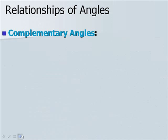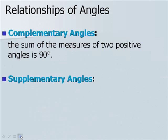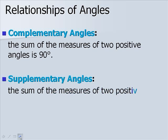We have two relationships of angles. The first is complementary angles, where the sum of the measures of two positive angles is 90 degrees. Then supplementary angles, where the sum of the measures of two positive angles is 180 degrees.